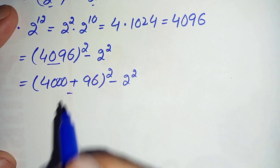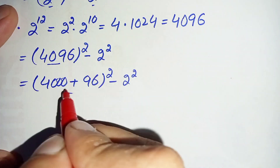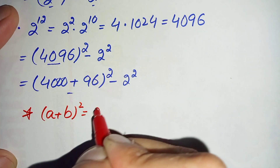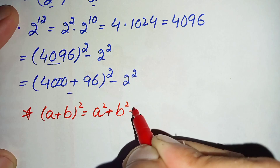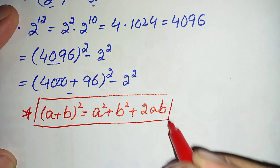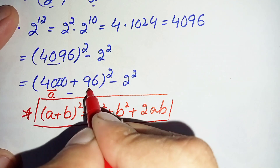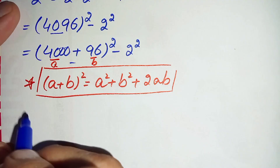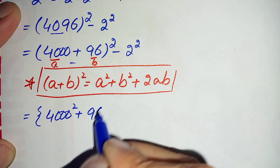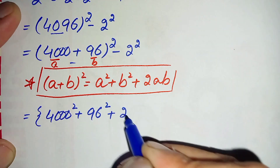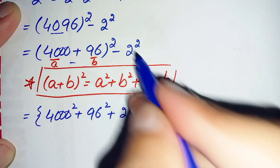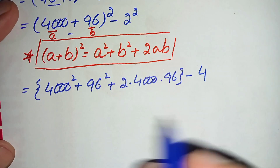Here in this term we will use the algebraic identity: a plus b whole square equals a squared plus b squared plus 2 times a times b. Using this identity, where 4000 is a and 96 is b, this equation becomes: 4000 squared plus 96 squared plus 2 times 4000 times 96, minus 2 raised to power 2, which is 4.